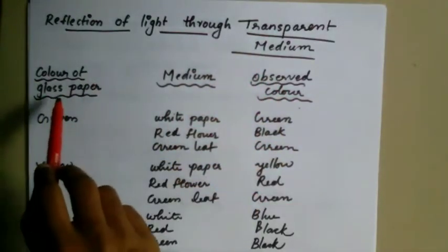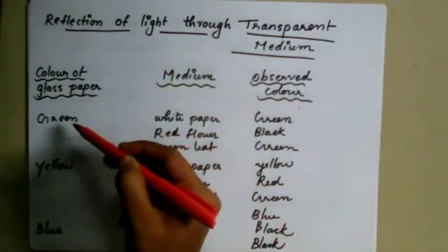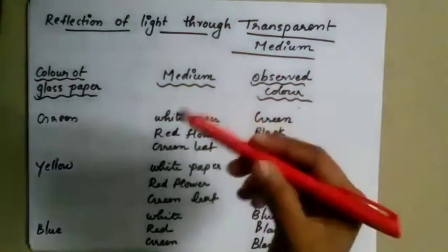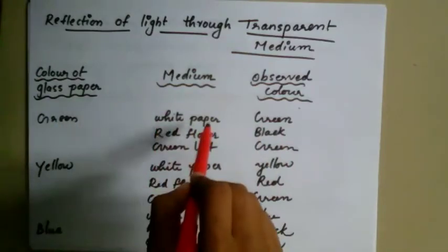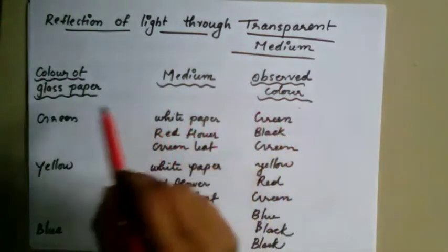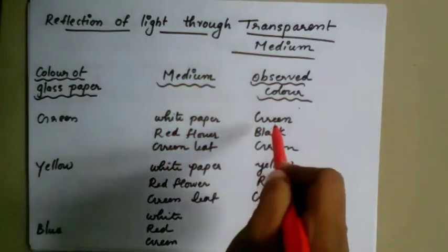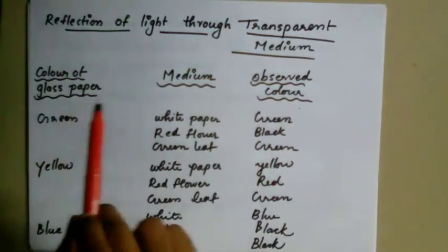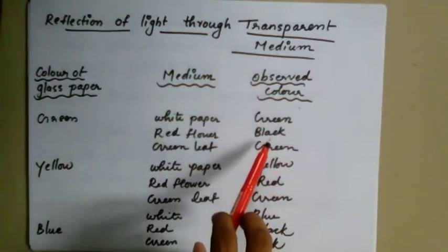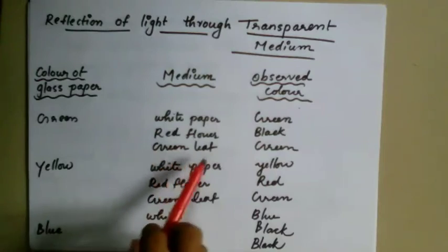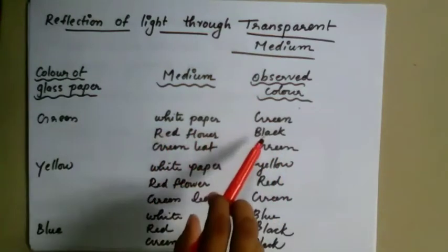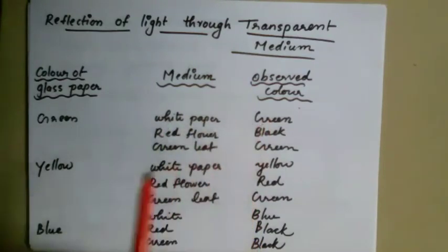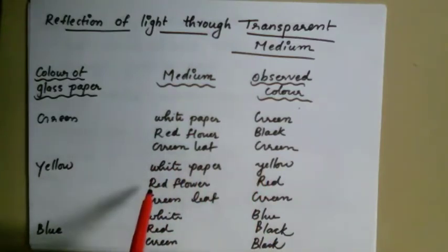Now let's look at the color of glass paper — a transparent medium. Different colors of glass paper transmit different colors. A green color of glass paper transmits green. A medium white paper reflects all colors. If you use a green leaf, it appears green. If you use a red leaf, it appears black. If you use a white leaf, you can see yellow.